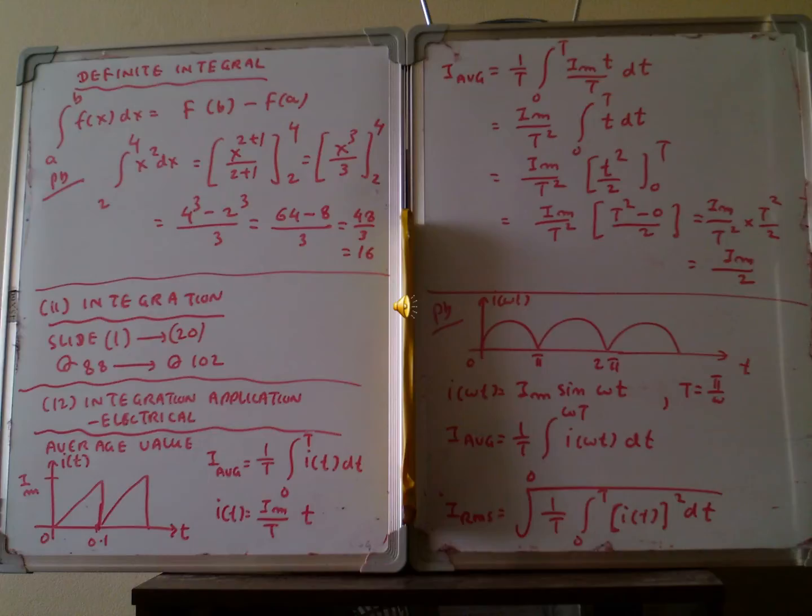The problem given is integration of h² dh with lower limit 2 and upper limit 4. So we integrate h² dh to get h³/3, then substitute the upper limit 4 and lower limit 2. Therefore 4³ minus 2³ divided by 3, so the final answer will be 64 minus 8 divided by 3.